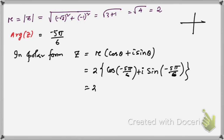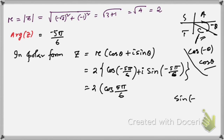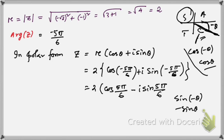Using the ASTC rule: in the fourth quadrant cosine is positive, so cos(-θ) = cos θ. That's why cos(-5π/6) can be written with a sign consideration. Since sin(-θ) = -sin θ and sine is positive only in the first and second quadrants, the negative angle puts us in the fourth quadrant — not the quadrant of sine — so we write a minus sign for the sine term. This gives the complete polar form.